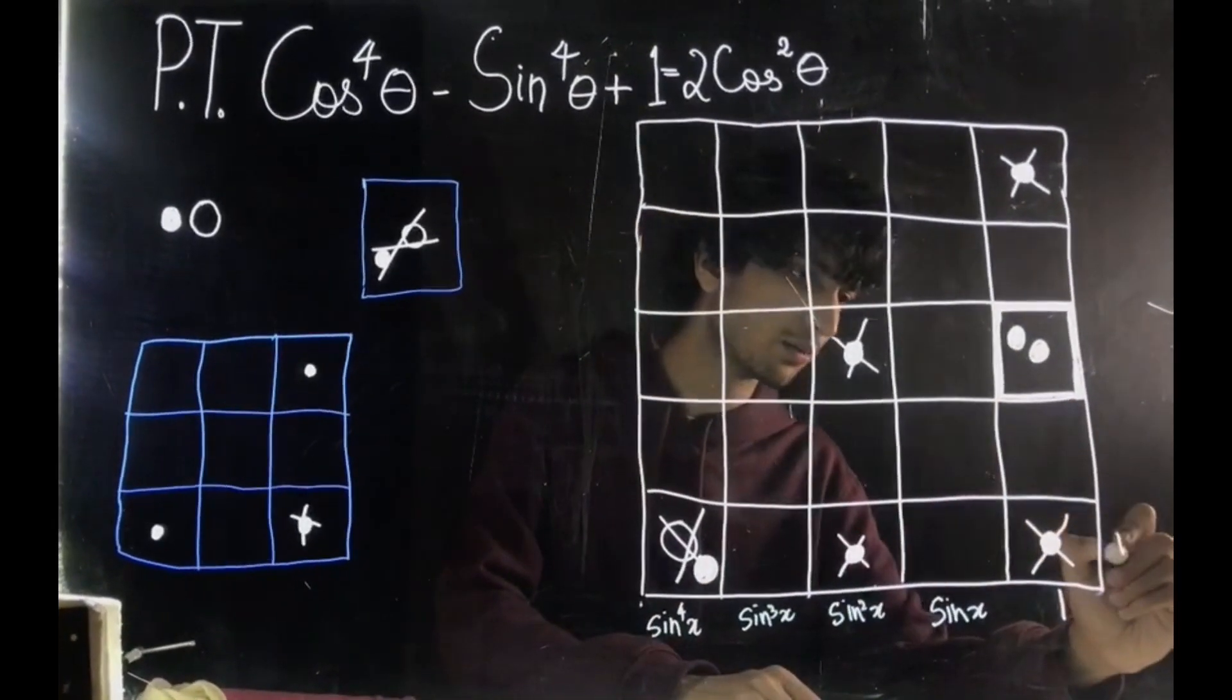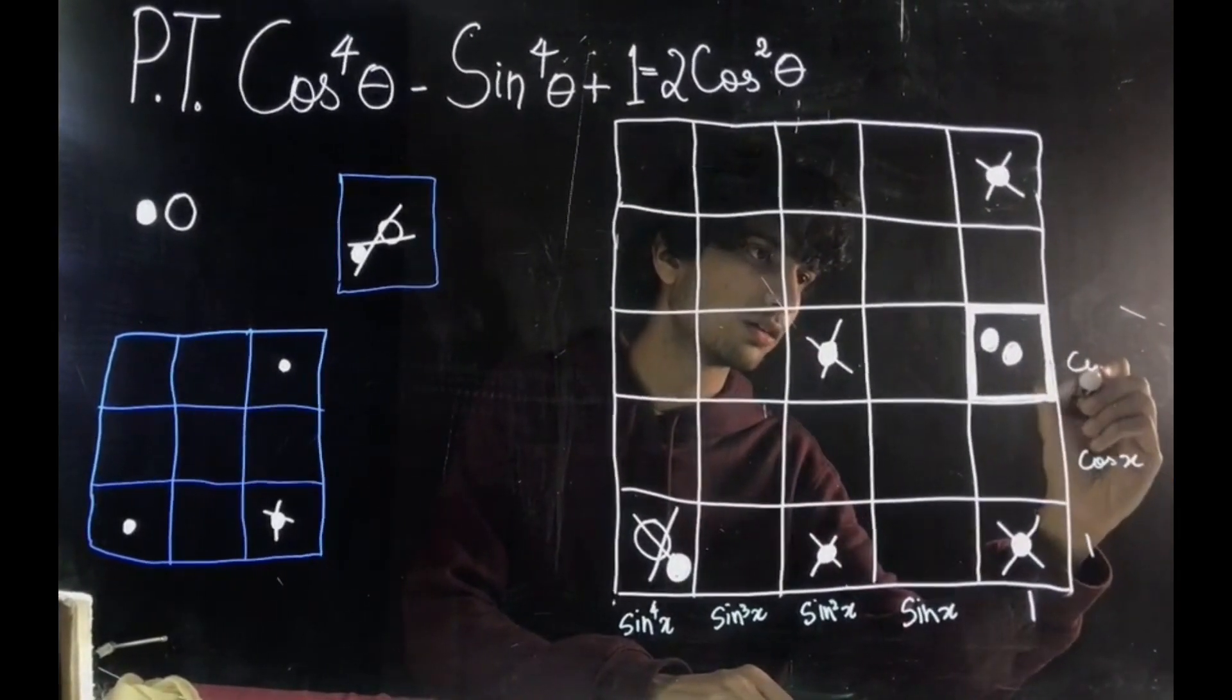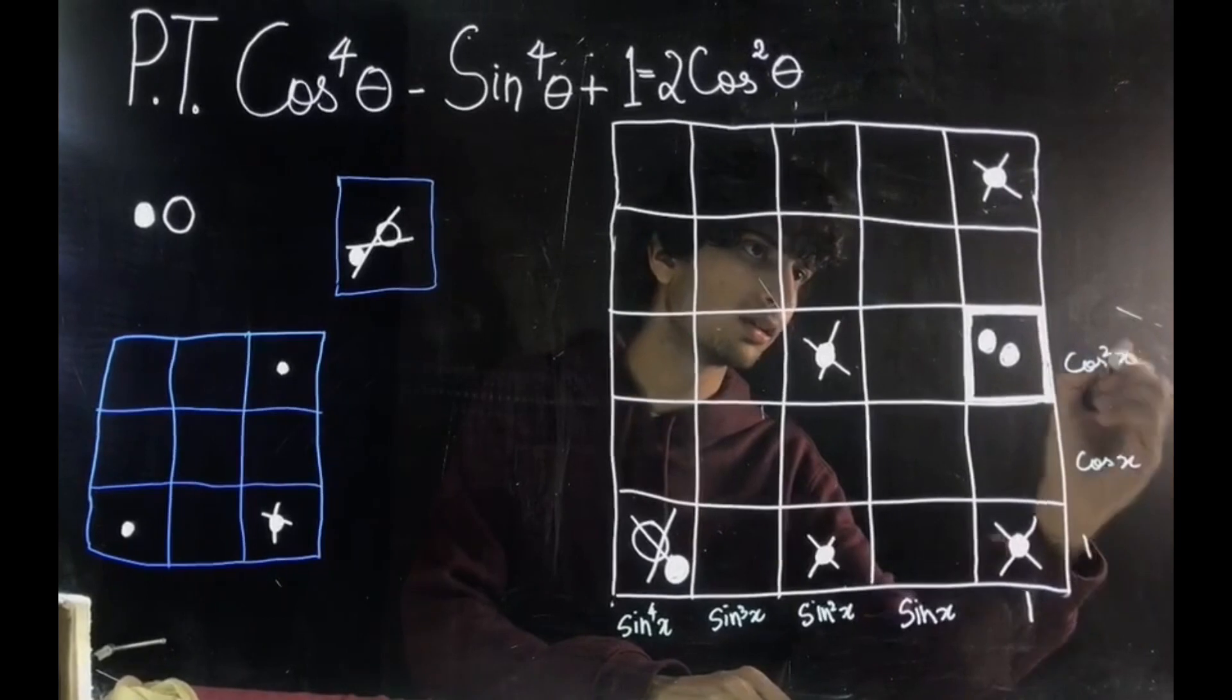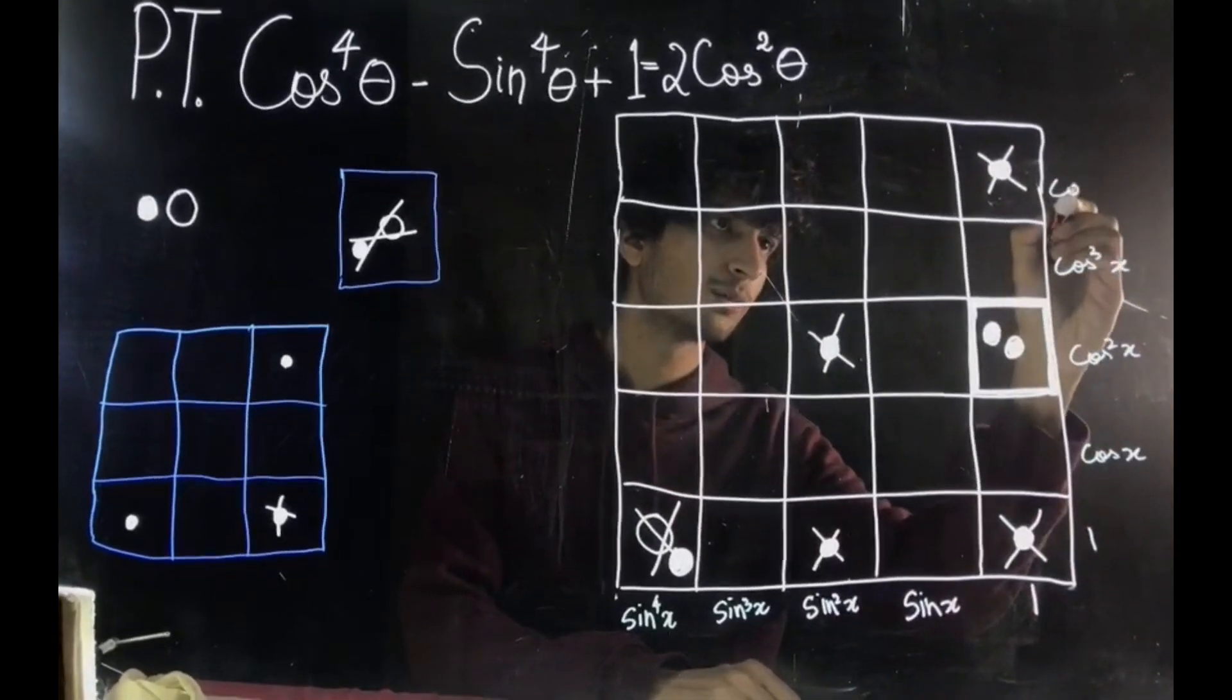Similarly, on this side: one, cos x, cos square x, cos cube x, cos to the power 4 x.